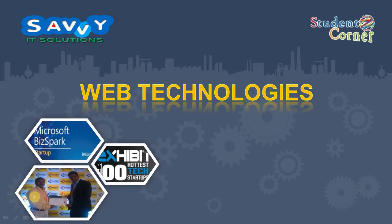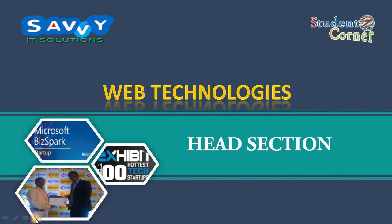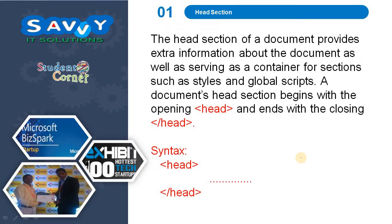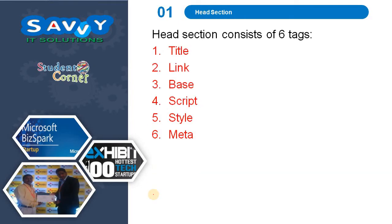Welcome to SaviIT Solutions. This is the second video on the head section. Already we discussed five tags and now we need to discuss the last tag, which is the meta tag. This is the most powerful tag in HTML. The head section of a document provides extra information about the document, as well as serving as a container for sections such as styles and global scripts. A document head section begins with the opening head tag and ends with the closing head tag. In the head section there are six tags: title, link, base, script, style, and meta.